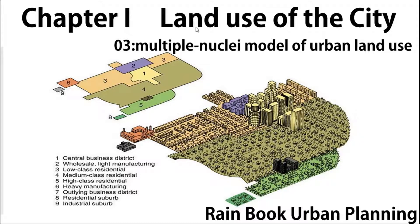In 1945, Harris and Ullman presented the multiple nuclei model. They think that there are still economic cells beside the CBD — that is, there are multiple business centers in the city. So the land use model should be different from the concentric model and the sector model.